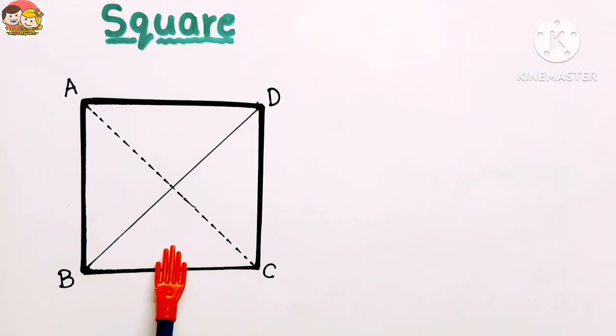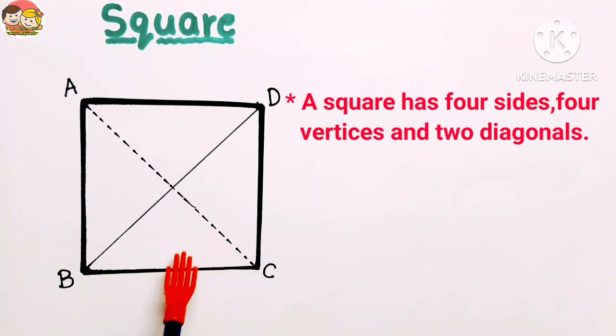Look at this figure. This figure represents a square. So this is a square shape. A square has four sides, four vertices, and two diagonals.